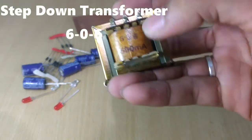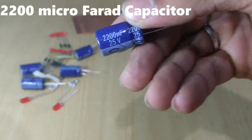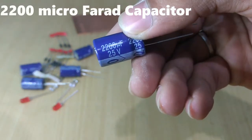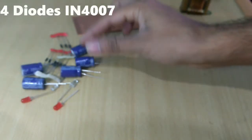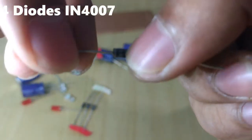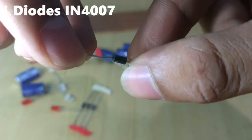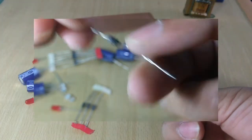For this project we will be needing a 606 transformer step down, a 2200μF capacitor, four diodes IN4007, and an LED of course.